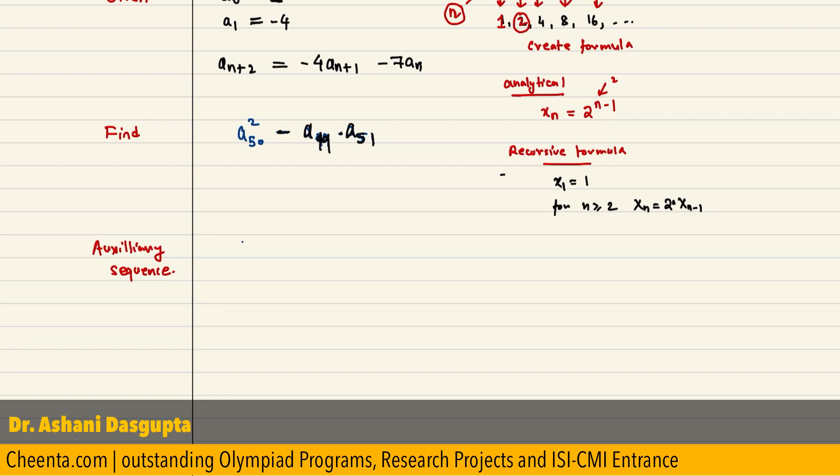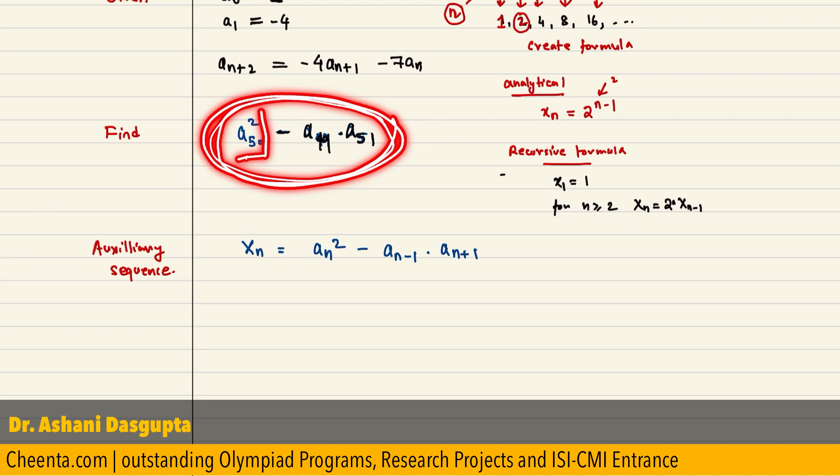I will create a new sequence, let us call it xn, which is equal to an square minus a(n-1) times a(n+1). So, basically, I am trying to mimic this final object.